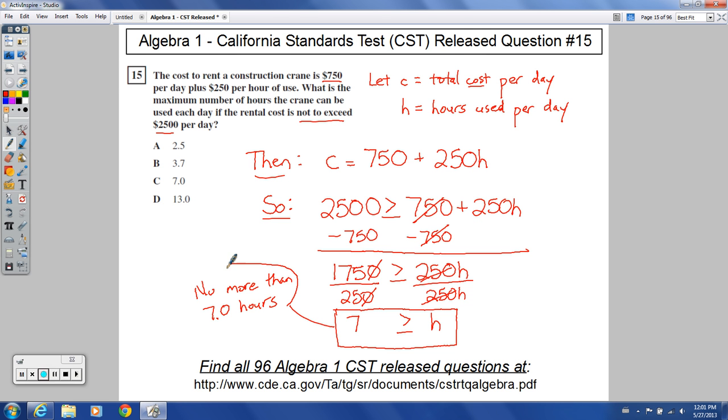You can't go over that. Otherwise, you exceeded the value of $2,500 that your company said you can't be spending more than per day. So no more than seven hours. Number 15 is choice C.